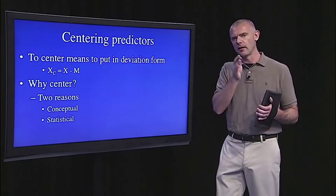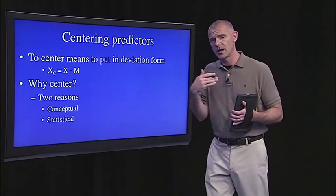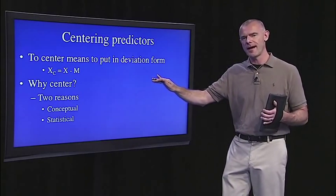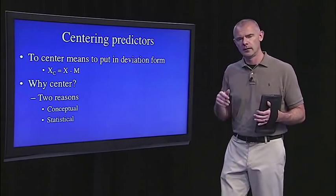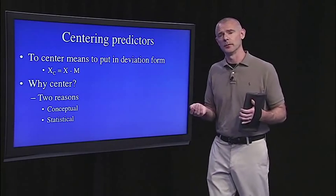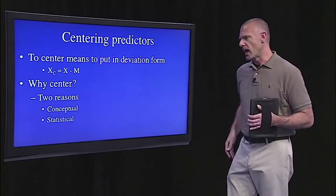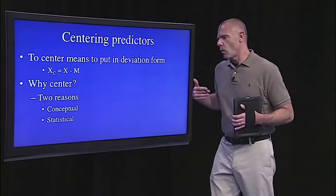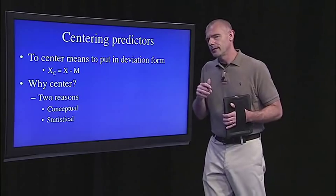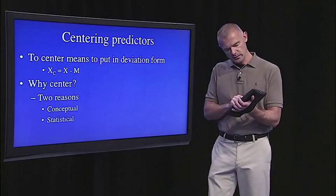That's convenient if you think about how to interpret regression coefficients, because the regression constant is the predicted score on y when all the x's are zero. So if we center, then that regression constant becomes really meaningful and easy to interpret. One of the reasons we want to do this is conceptual, and the other is a purely mathematical statistical reason, which I'll get to after the conceptual part.